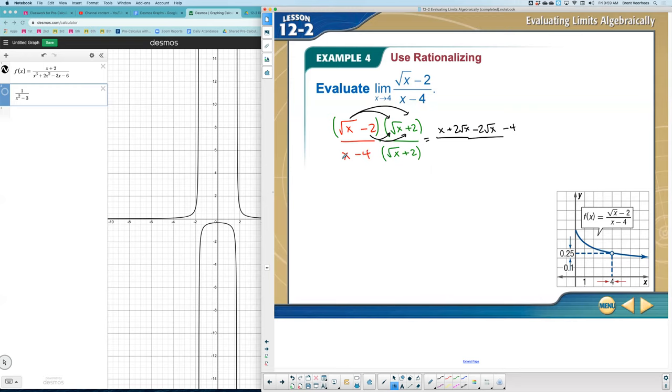In the denominator, I'm not going to multiply this value at all. I should add parentheses around that. I'm going to leave this as x minus four times the quantity square root of x plus two. I have an x plus two square root of x and minus two square root of x. We need to simplify these values out. This value would simplify out with this value.